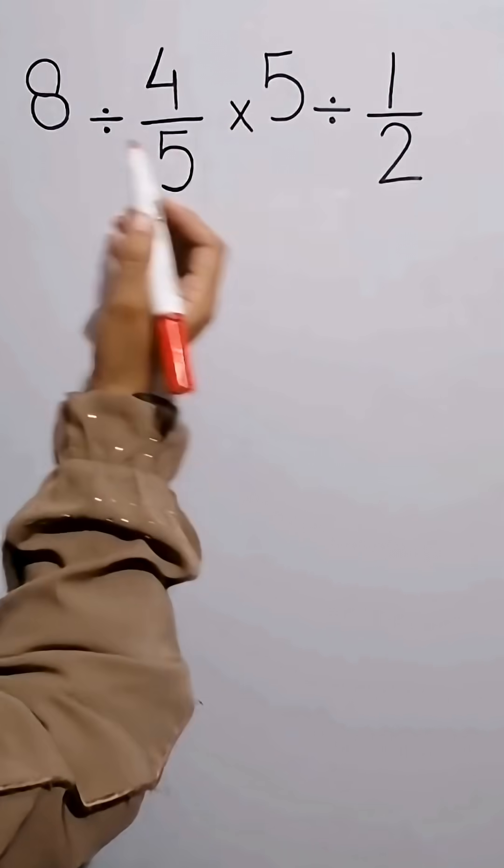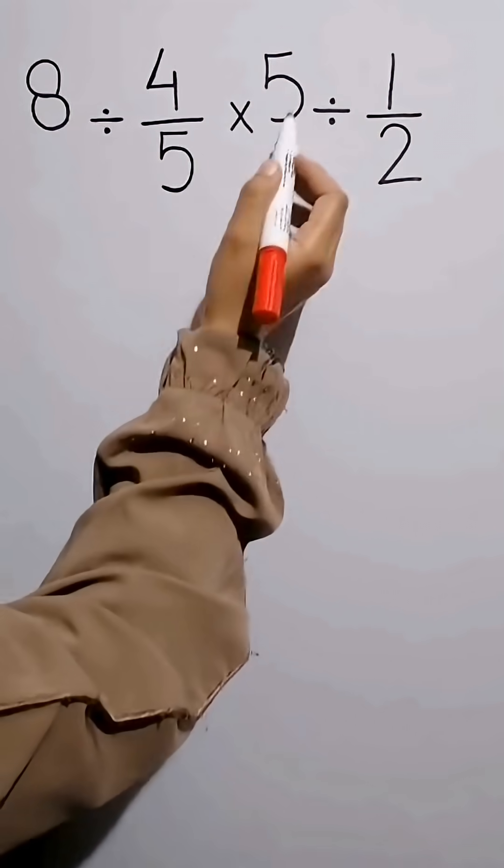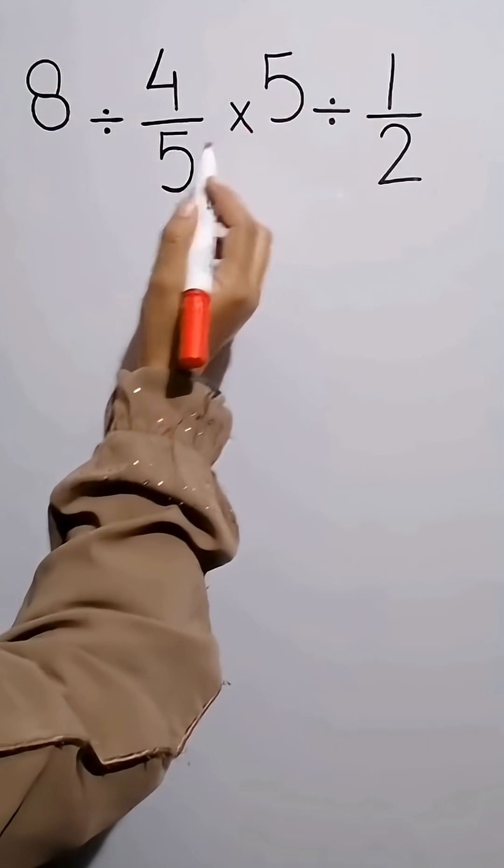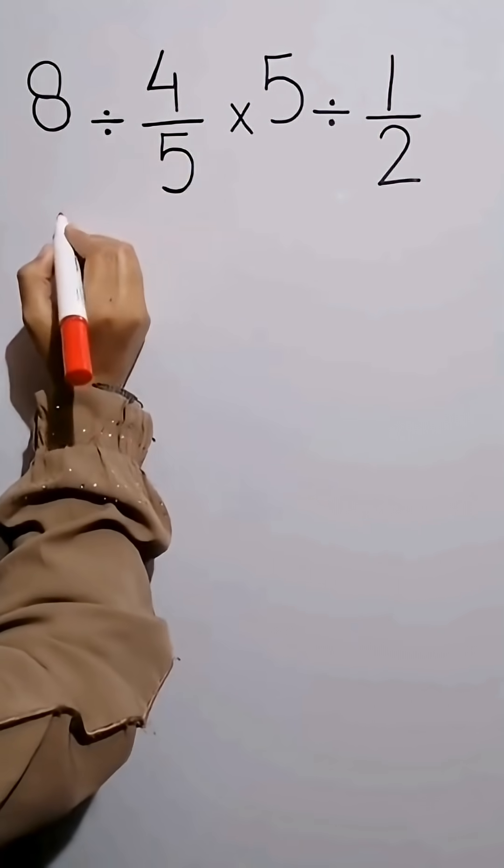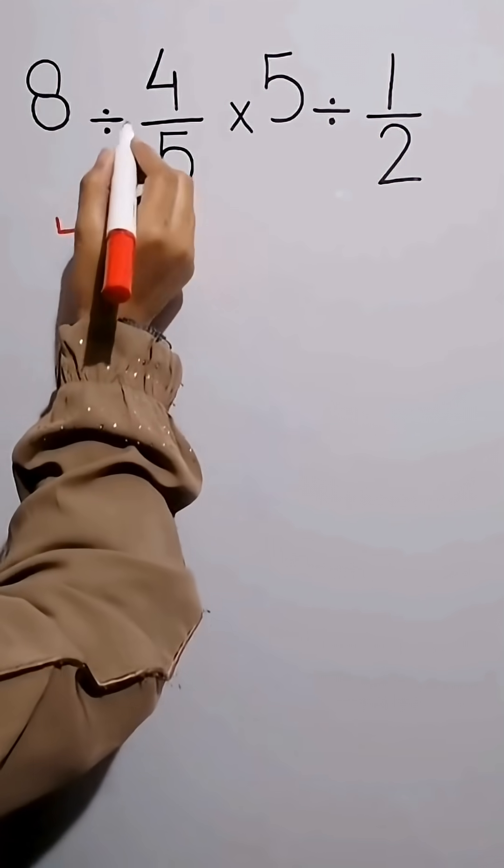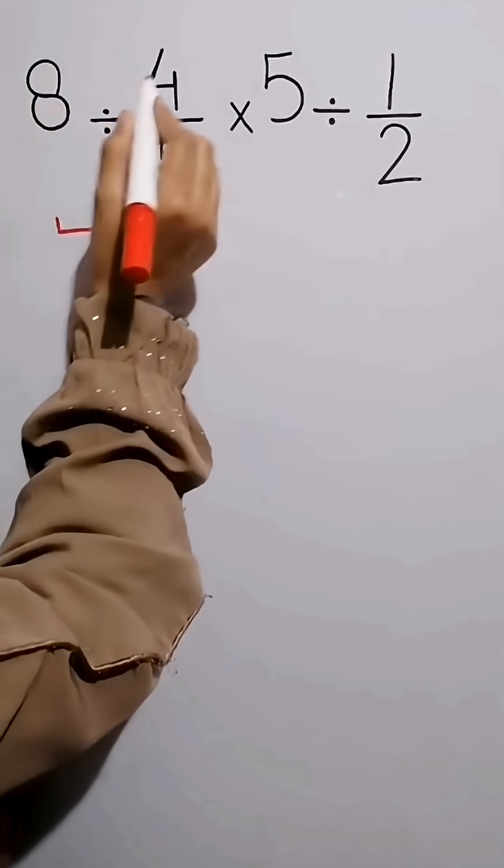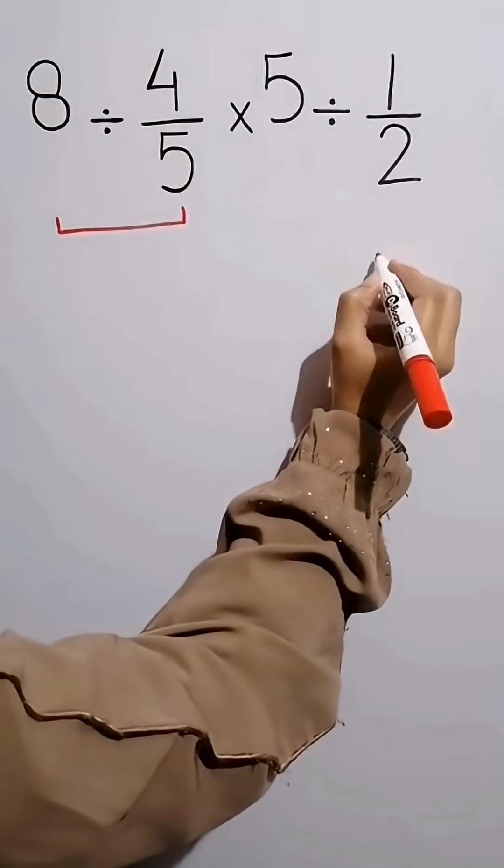As you can see on the screen, in this expression we have two division and one multiplication sign. First we do division between 8 and 4 over 5. Whenever we see a division sign between two terms, the best thing to do is to apply the KCF rule.